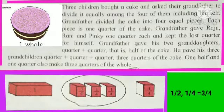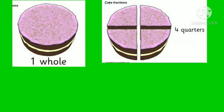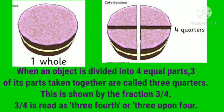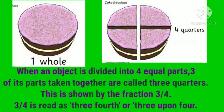You can see in the picture: one cake is there and the children told grandfather to divide it into four, including the grandfather. He divided it — one quarter to each grandchild, so two granddaughters got quarter plus quarter, that is half. Half plus one quarter means three quarters. When an object is divided into four equal parts, three of its parts taken together are called three quarters. This is shown by the Fraction 3 upon 4. Three upon 4 is read as three-fourths or three upon four.